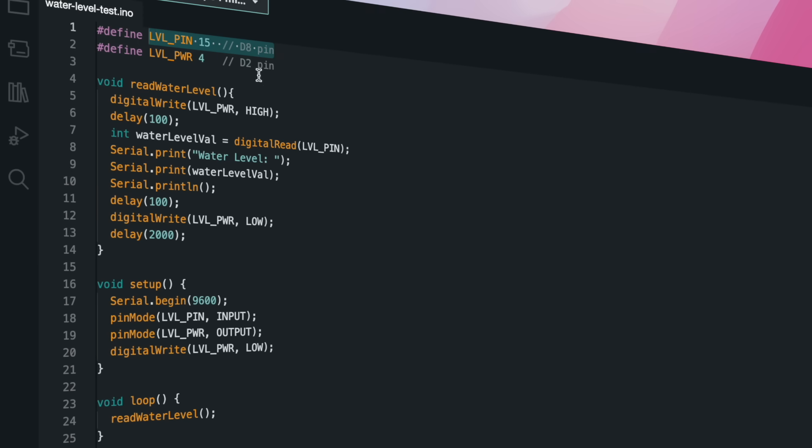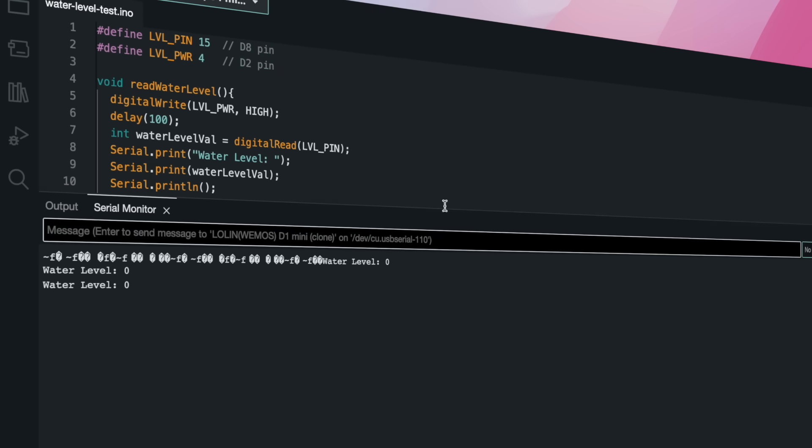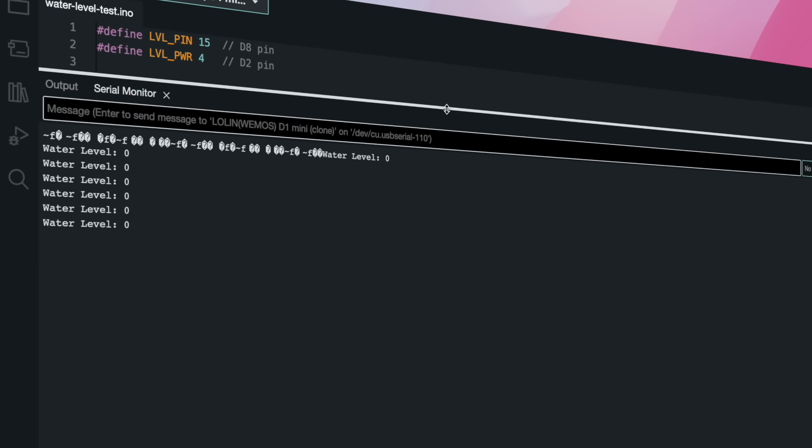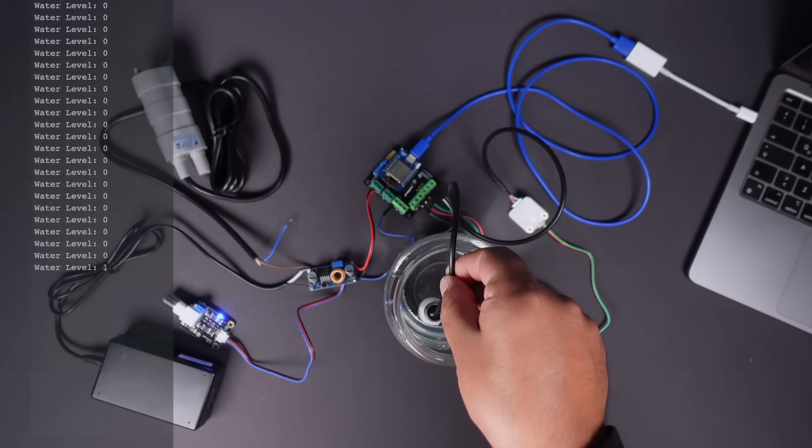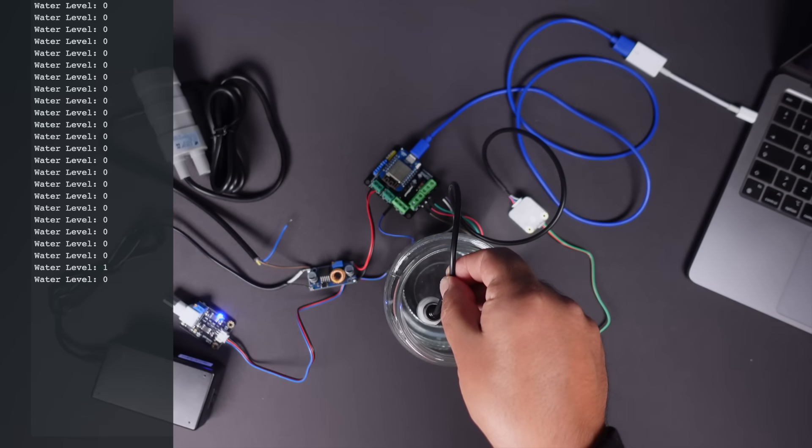Open the shared code and make the necessary pin updates. Then load the code and turn on the serial monitor. Immerse the sensor in the liquid and observe the printed data. As you can see, the liquid sensor works successfully.